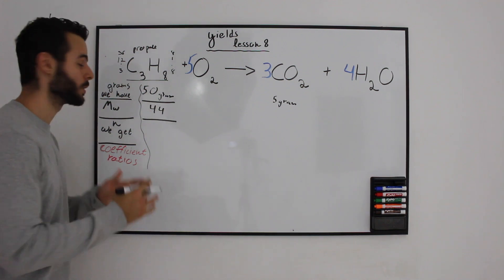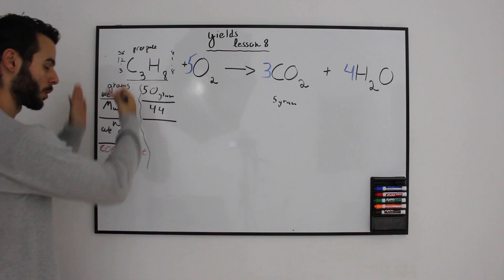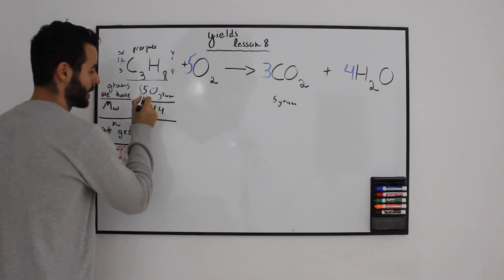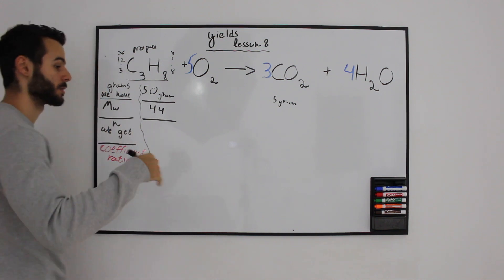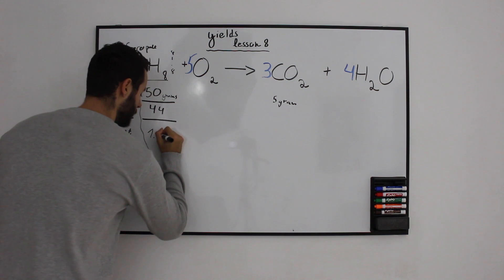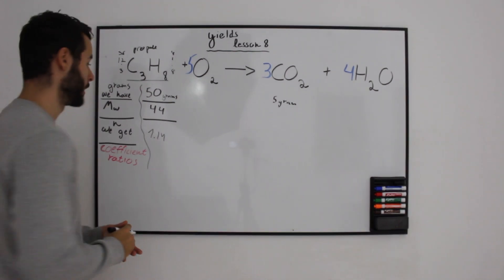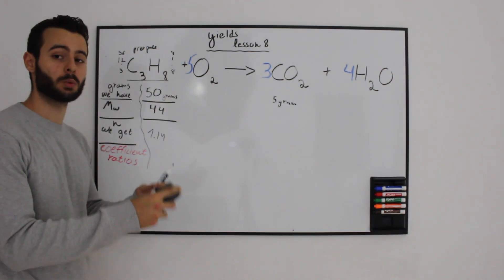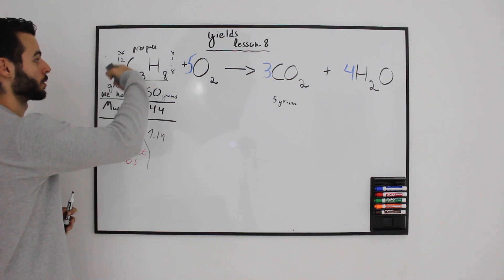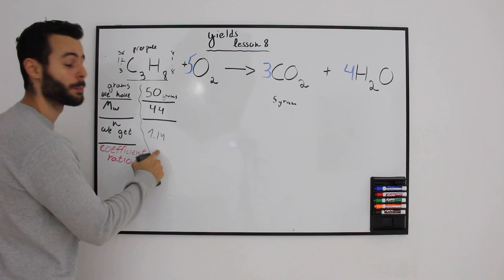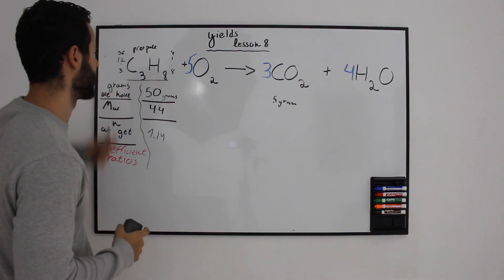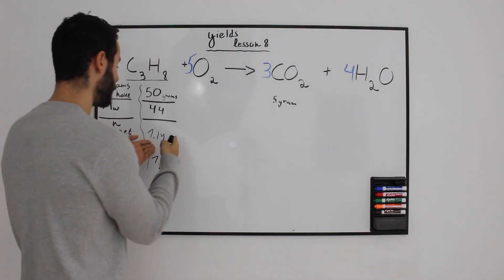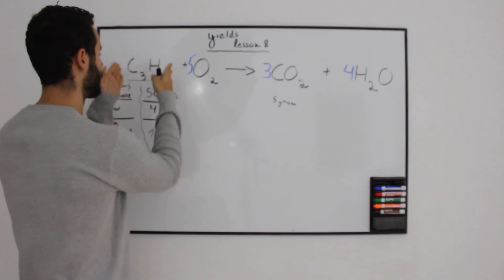The reason I wrote the sections in this order is to make our life very easy. We can just divide 50 by 44 and get the number of moles, which is 1.14 moles. The next thing we'll do, and this is the most important part, is to see the coefficient of the molecule. Propane doesn't have any coefficient, so we have 1.14 as the number of moles. Now we know the moles, molecular weight, and how much propane we have.